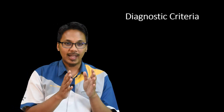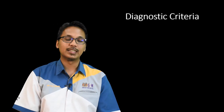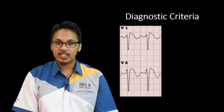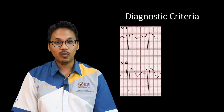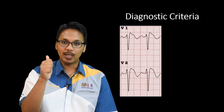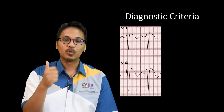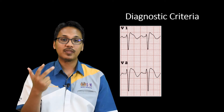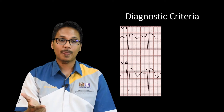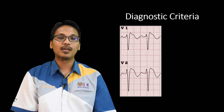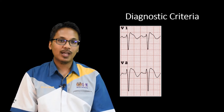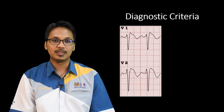What are the diagnostic criteria for Brugada syndrome? There are at least three types of ECG patterns in Brugada syndrome: Type 1, Type 2, and Type 3. We'll go through the Type 1 Brugada ECG changes first.